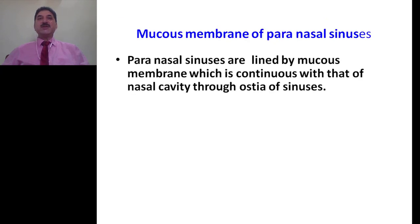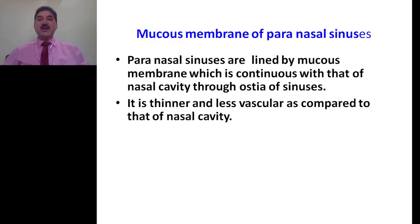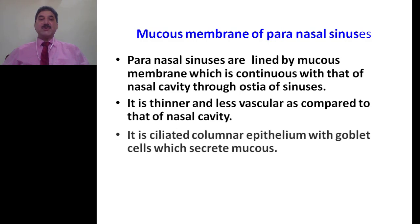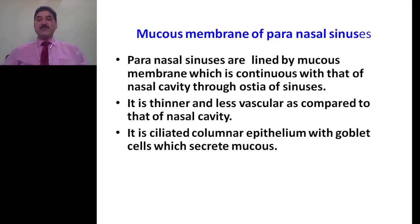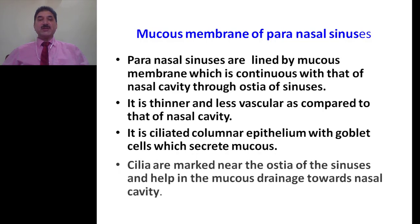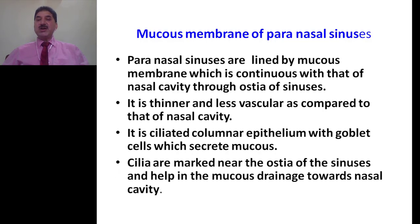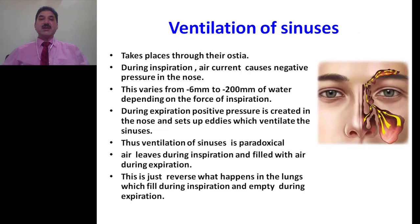Mucous membrane of the sinuses: paranasal sinuses are lined by mucous membrane which is continuous with that of the nasal cavity through ostia of the sinuses. The mucous membrane is thinner and less vascular as compared to that of the nasal cavity. It is ciliated columnar epithelium with goblet cells which create mucus. Cilia are more numerous near the ostia of the sinuses and help in the mucous drainage towards the nasal cavity.